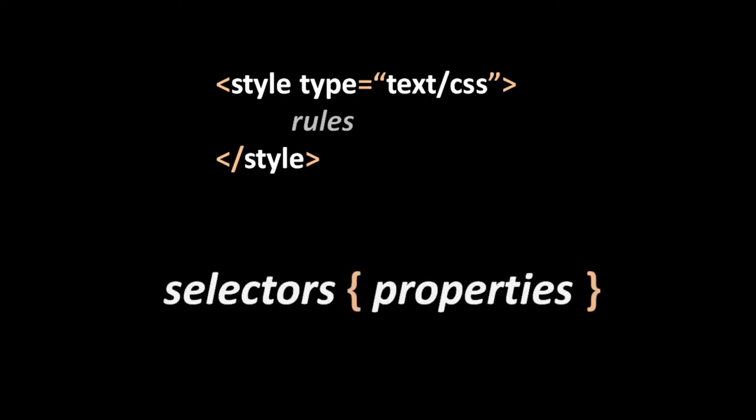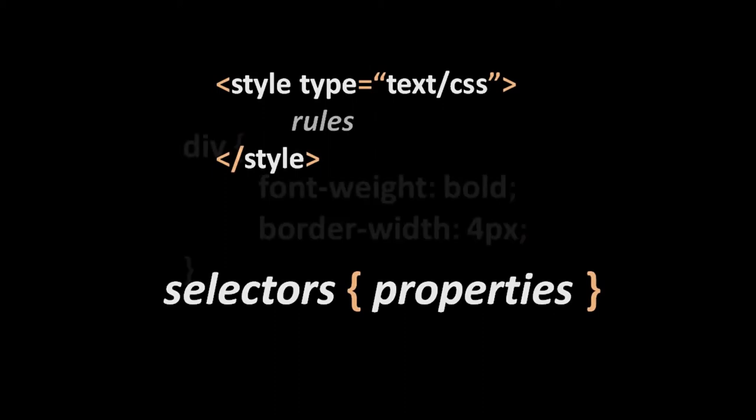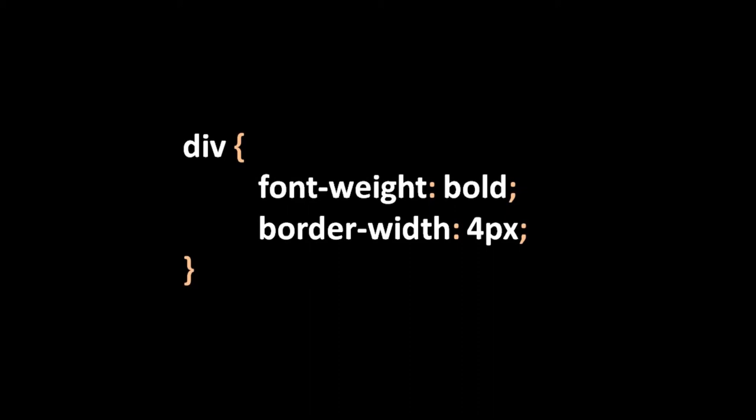A CSS rule has the form: selector (or multiple selectors) followed by a pair of curly braces inside which you list one or more properties. The selector specifies which elements we're going to apply these properties to. The simplest kind of selector is one that just specifies the name of a tag, which simply means to apply these properties to all tags of that type. So here we have a rule with the selector div and two properties — font-weight bold and border-width four pixels — applied to all div tags.